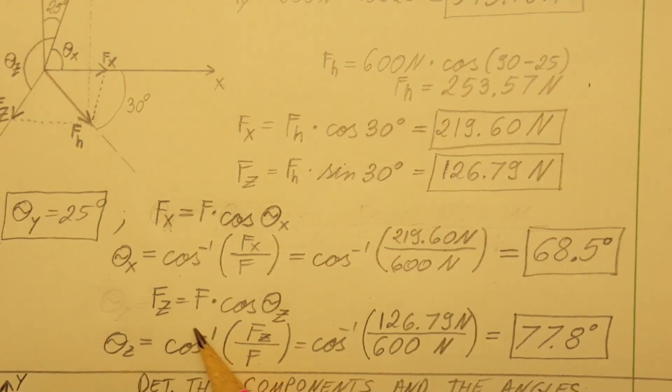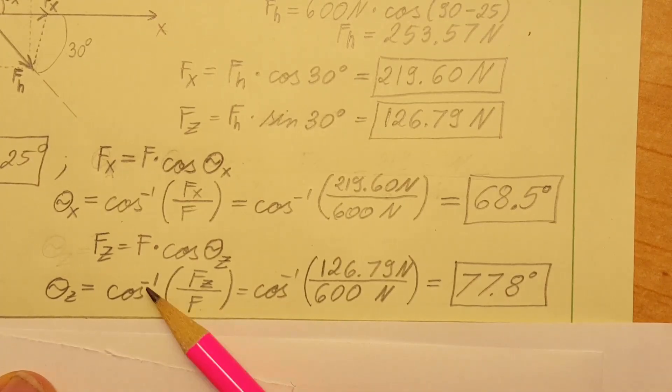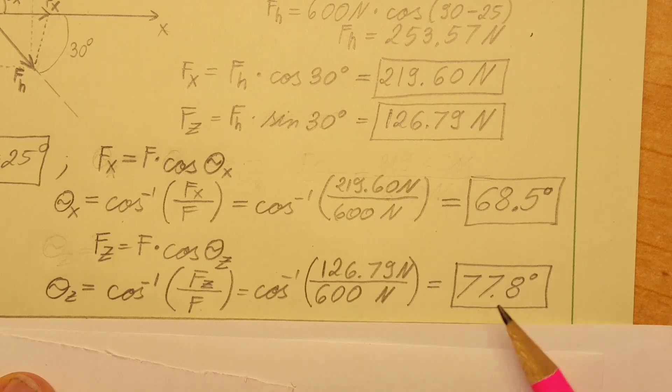We're going to write up fz equals f times cosine of theta z. With cosine inverse we're going to solve for the theta, and the calculator we get 77.8 degrees.